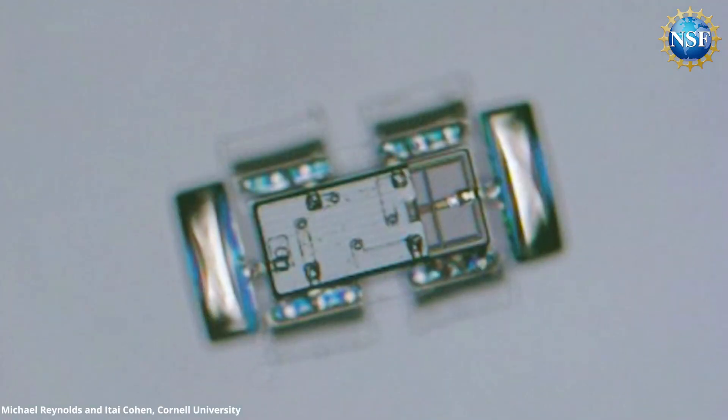These robots are unique in that they have a circuit on board that controls the robot. Previous to the work that we're doing, basically, if you wanted to build a robot that small, you had to control it externally. It was more like a marionette.